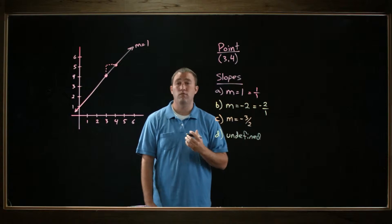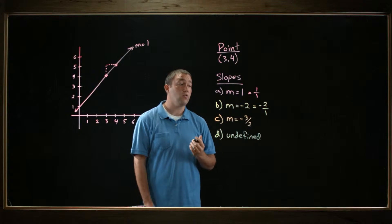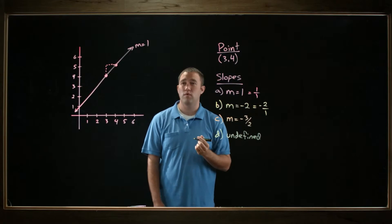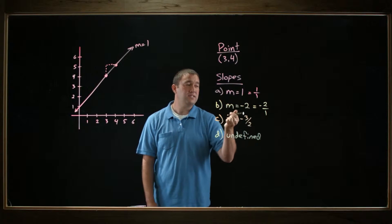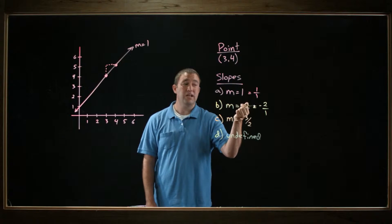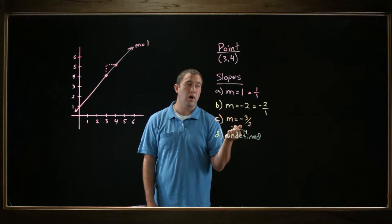I could write it as negative 4 over 2 or negative 100 over 50 if I wanted to, but negative 2 over 1 is a little easier, I think. So this says I've got to rise negative 2 and run 1.